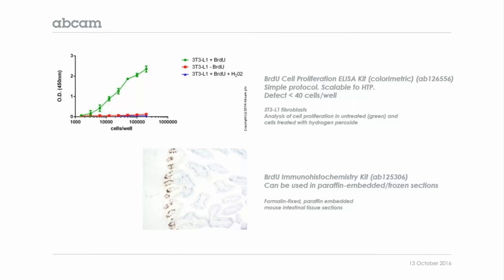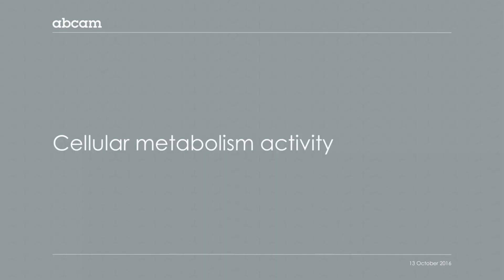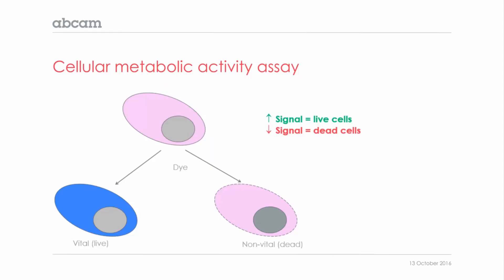Proliferation can also be measured by looking at cellular metabolic activity. The working principle has already been described in the viability section. Briefly, a dye gets modified by the activity of intracellular enzymes, and if the cell is proliferating, it will generate a stronger signal detectable by either absorbance or fluorescence.